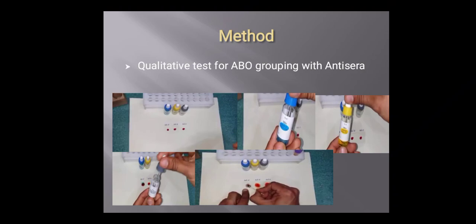Here the anti-A is blue in color, the anti-B is yellow in color and the monoclonal D is gray in color.